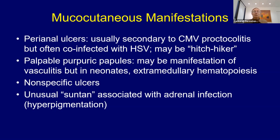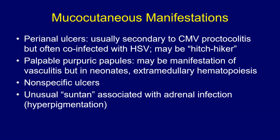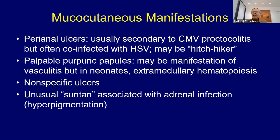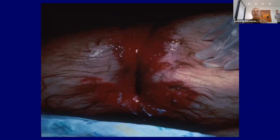Other manifestations include palpable purpuric papules especially in neonates with extramedullary hematopoiesis. If you see someone with a weird suntan in the middle of winter when they shouldn't have one, think about the possibility of underlying adrenal infection, especially in an immunocompromised person.